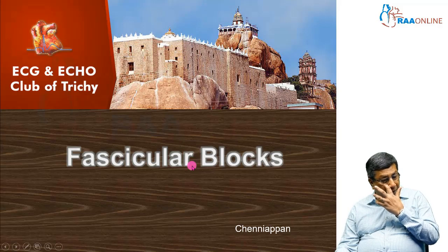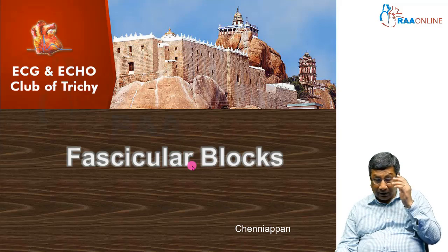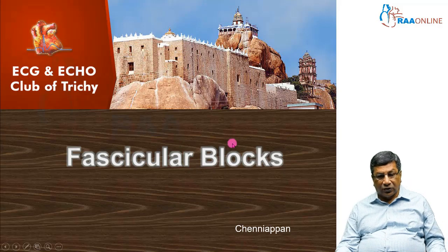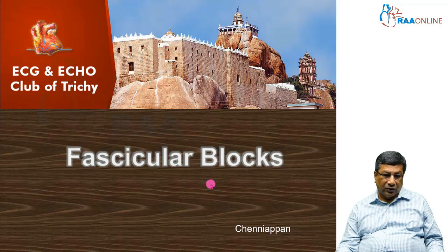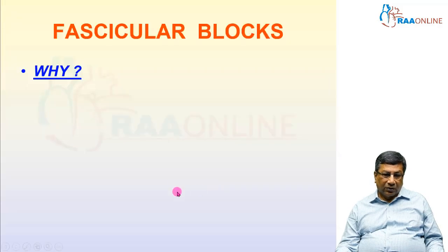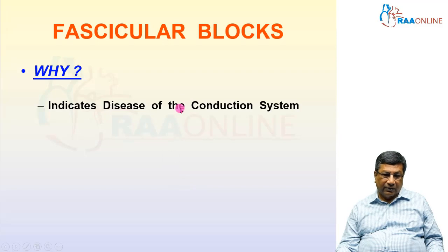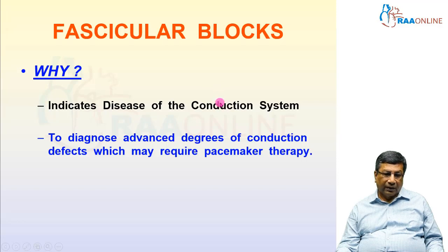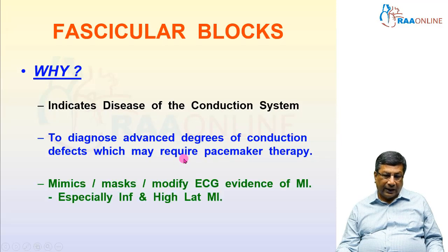Fascicular block also has to be seen as a very important marker, especially when it is associated with bundle branch block — a very important marker of future major conduction disturbances to the heart. It indicates a disease of the conduction system, especially below the AV node — a distal conduction system disorder. In the presence of a bundle branch block, the fascicular block means there is an additional problem, and it may require pacemaker therapy to prevent sudden death and a future complete heart block.